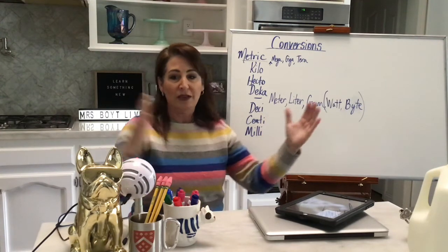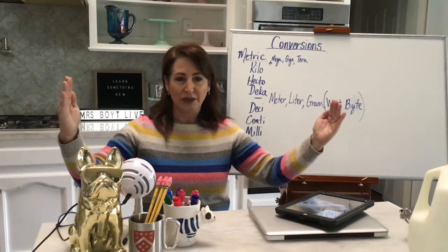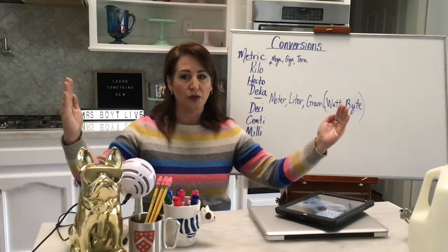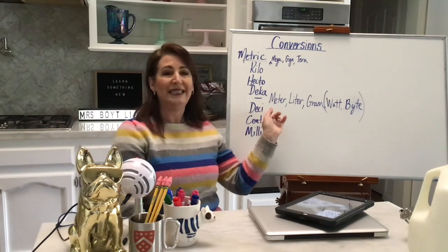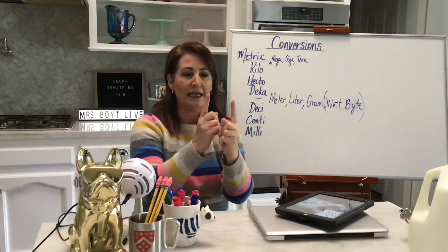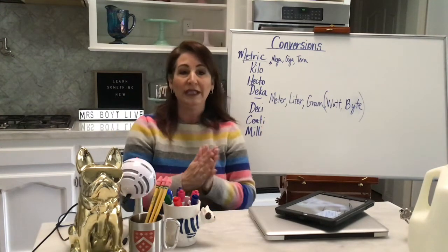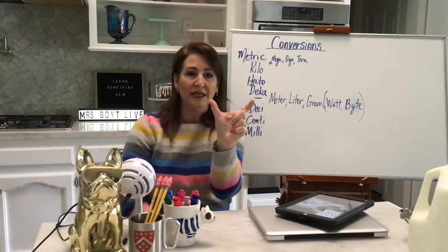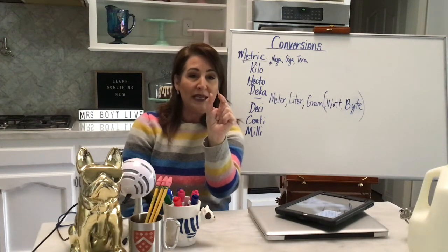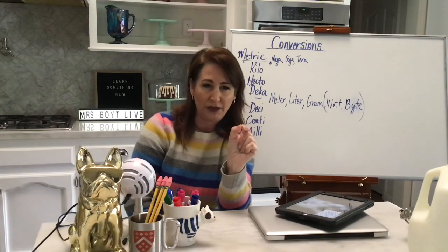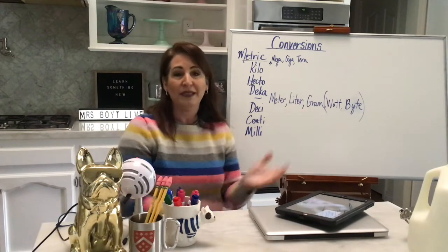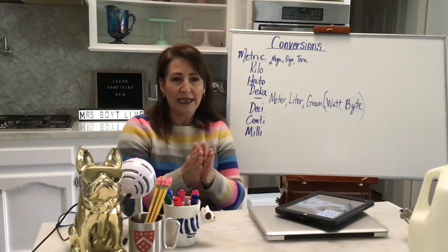Let's talk about meters. If you take a meter — it's about yay big, I don't have a meter stick with me, it's in my classroom — and you break that into pieces, you're going to break it up into 10 pieces first. Those 10 pieces are called a decimeter. If you take that decimeter and break it into 10 pieces, you convert that into centimeters. If you take one of those centimeters and break it up into 10 pieces, you have 10 millimeters. That is a very tiny amount — milliliters for liquid, milligrams for weight.